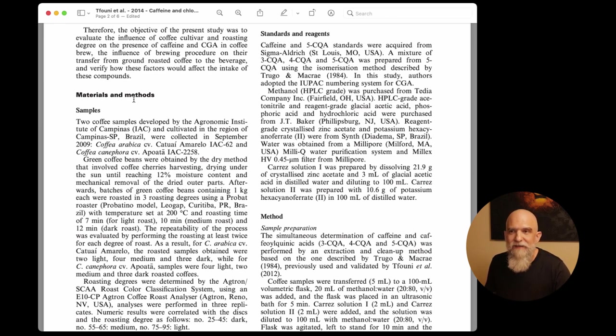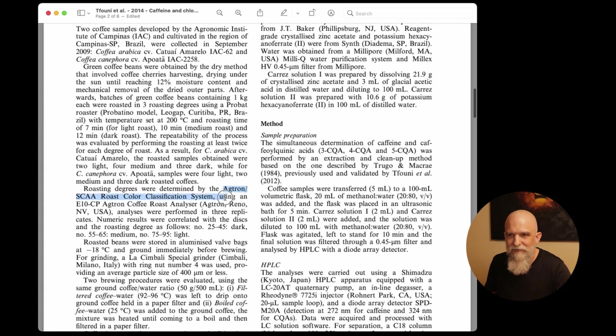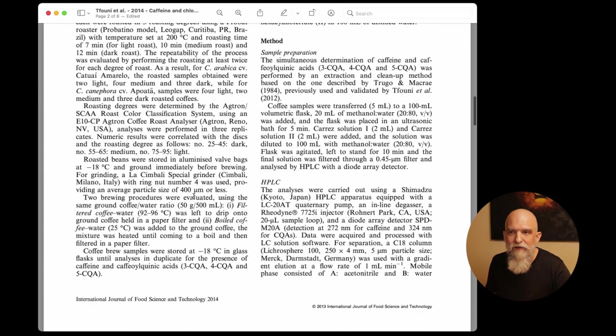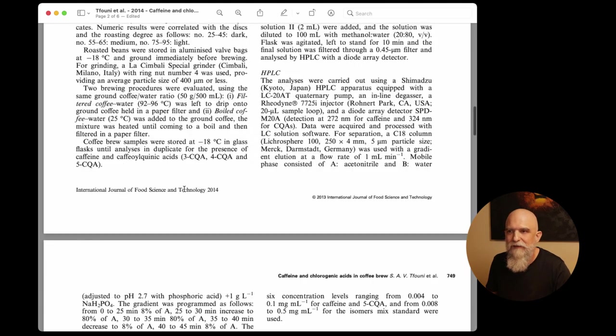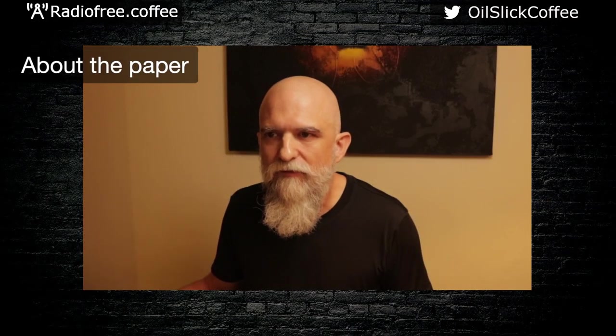The methods and materials or materials and methods. This is where it gets very science-y. This is where the authors describe in detail the experiment. They're going to tell you all of the information you need to know in order to reproduce the experiment. So you will see that they mention the specific Agtron make and model that they use. So here they mention the E10-CP Agtron analyzer. This way, if you as a reviewer or you as another scientist or researcher know that this specific Agtron unit is faulty, for example, you can let them know that or you can use this information to reproduce the experiment on your own, which is another valid part of science.